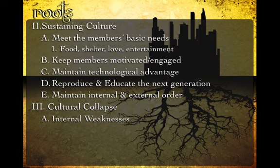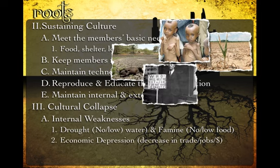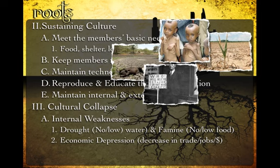Finally, we have cultural collapse, broken into two categories. First are internal weaknesses. Things like drought — no or low amounts of water — and famine, which is no or low amounts of food. This starts to erode the core aspects of what members of society need. No water, no food, people begin to die or migrate to another area. Economic depressions cause people to lose jobs and money, cramping their ability to advance technology or take care of basic day-to-day needs, weakening the structures of a civilization.